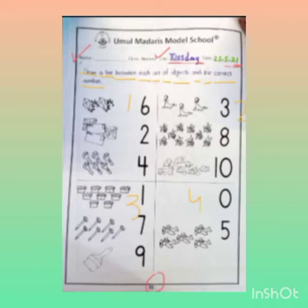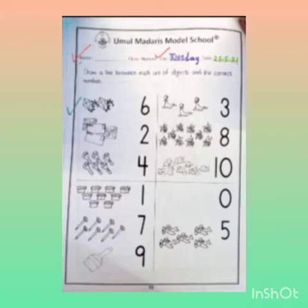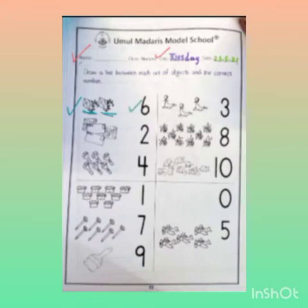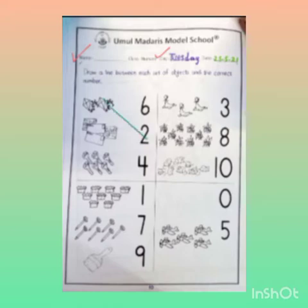How many sets are there? Four sets. यहाँ पर हमने matching करनी है। What are these? These are kites. How many kites? One, two — two kites. अब इस row में हमने check करना है के two कहाँ लिखा है। Is it two? No, this is six. Is this two? Yes, this is two. तो हम two kites को two number से match कर देंगे।